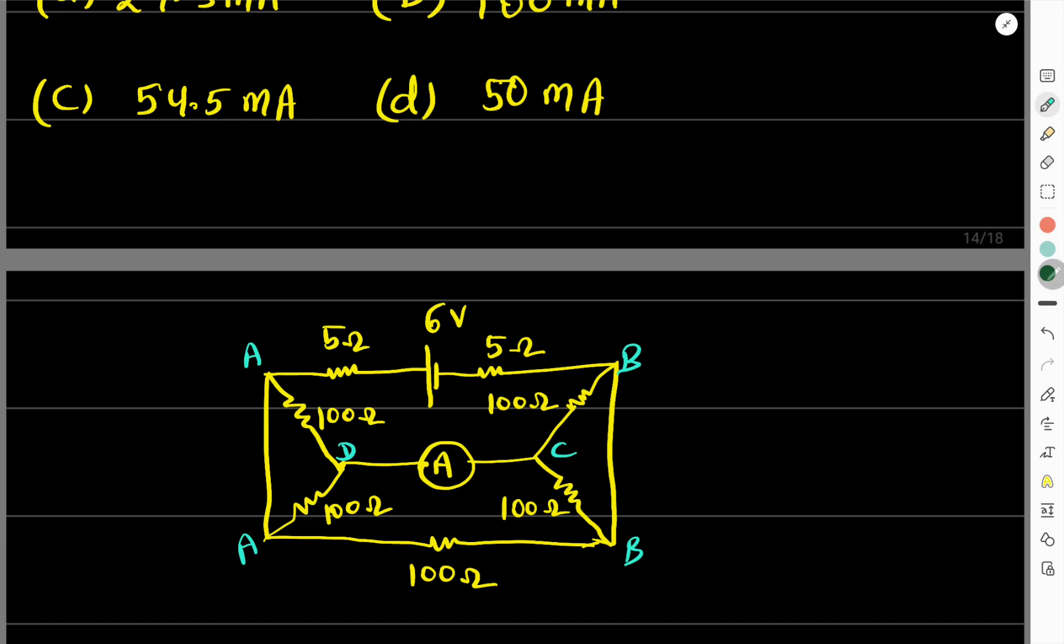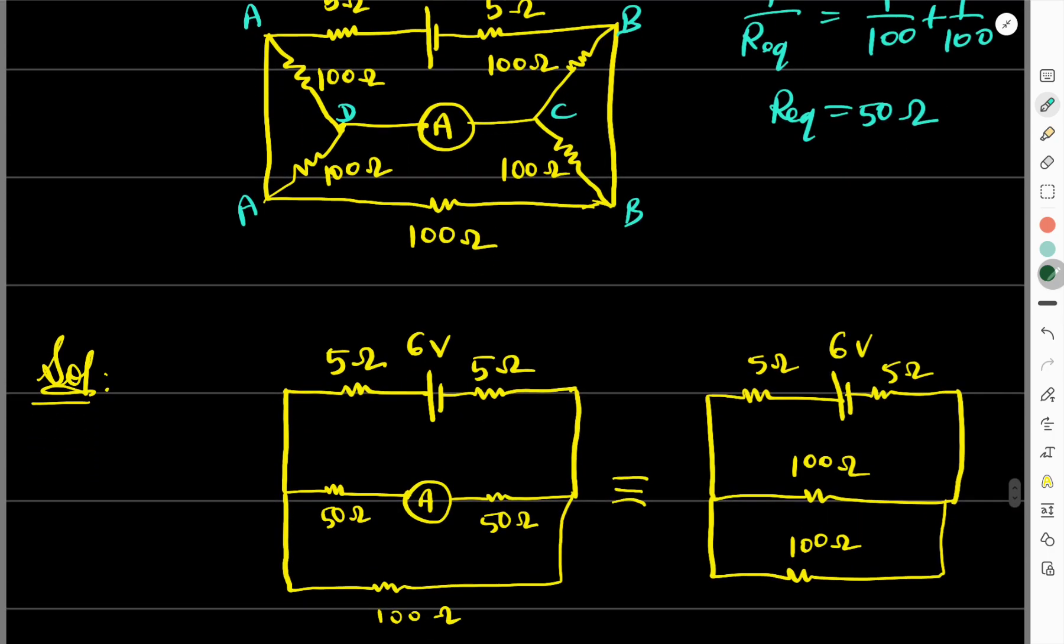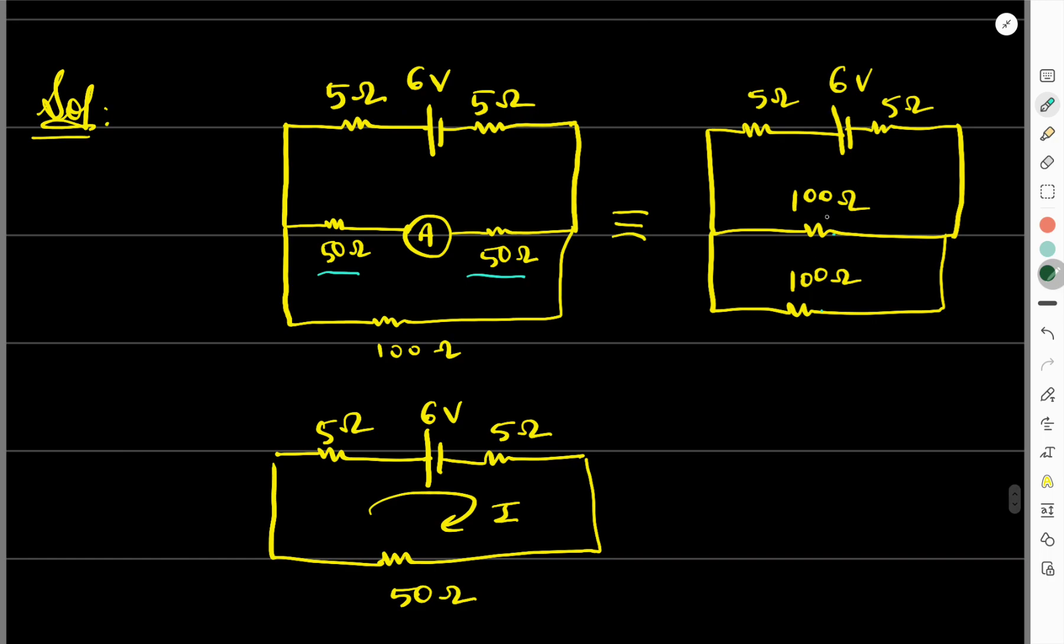Similarly point B is here and this is point B. Let's call this point C and this point D. Between A and D there is 100 ohm resistance, and here between A and D there is 100 ohm resistance. So both will be in parallel combination. So 1 upon R equivalent will be 1 upon 100 plus 1 upon 100. So R equivalent here will be 50 ohm.